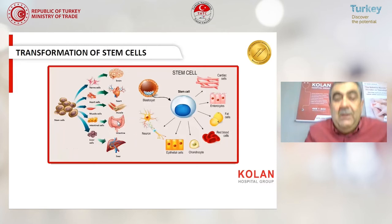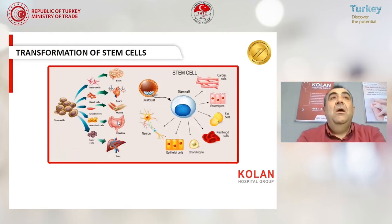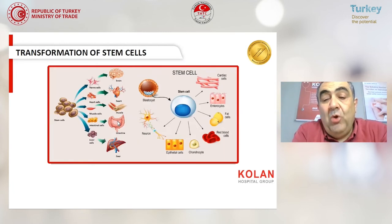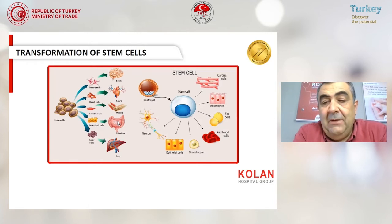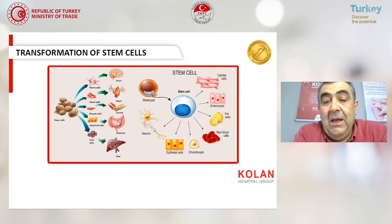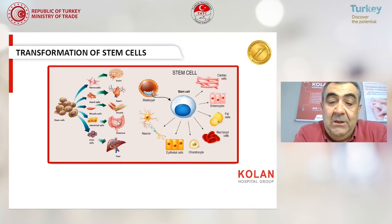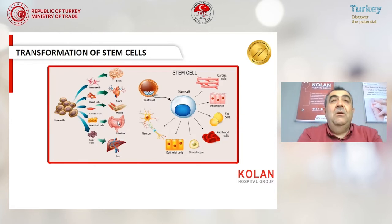Stem cells can be transformed into somatic stem cells — for example, stomach stem cells, dermatological stem cells, enterocytes, fat cells, chondrocytes, endothelial cells, neuronal cells, astrocytes, liver cells, and so on. Stem cells can transform into all somatic stem cell types.